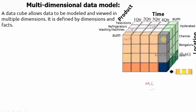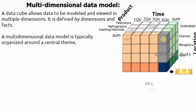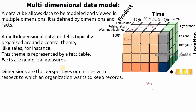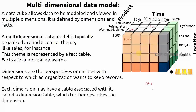A multi-dimensional data model is typically organized around a central theme, which here is sales. This theme is represented by a fact table — the sales fact table. Facts are numerical measures such as total sales, average sales, or maximum sales. Dimensions are the perspectives or entities with respect to which the organization wants to keep records: product, time, and location. Sometimes analysis is needed across more than one dimension, which is why combinations are taken.